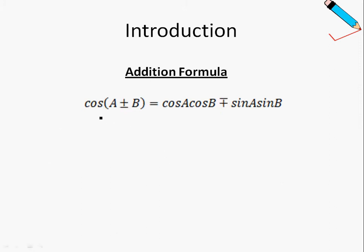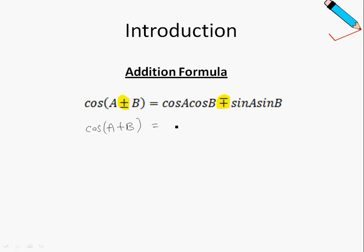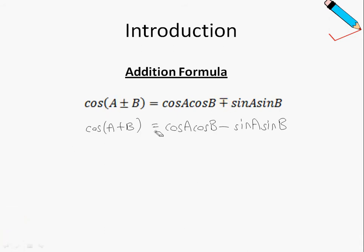For the cosine function, take note that this symbol has now been inverted on the right-hand side of the equation. This means that the cosine of A plus B is equals to the cosine of A multiplied by the cosine of B, minus the sine of A times the sine of B. So the plus will coincide with the minus sign.